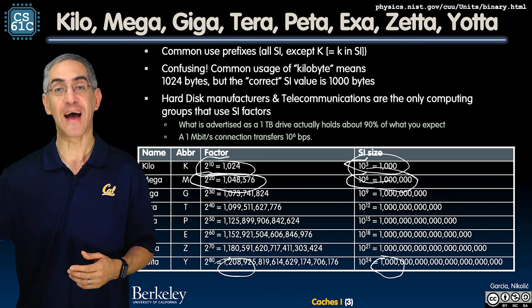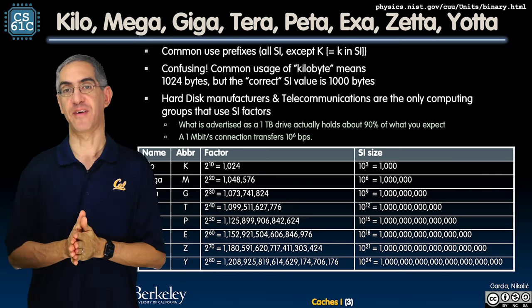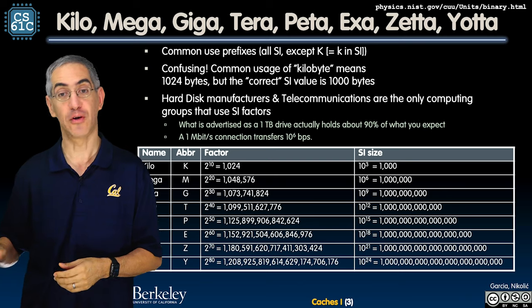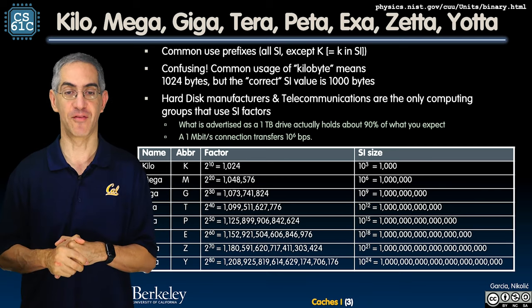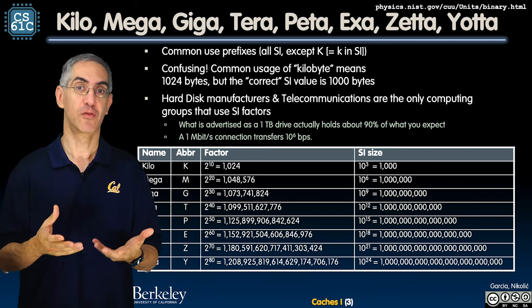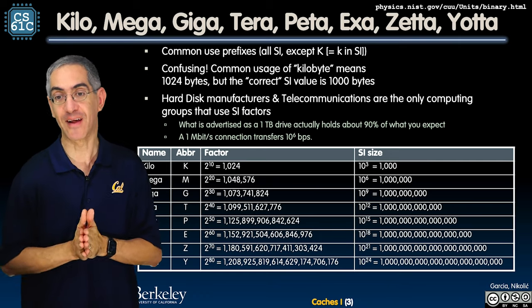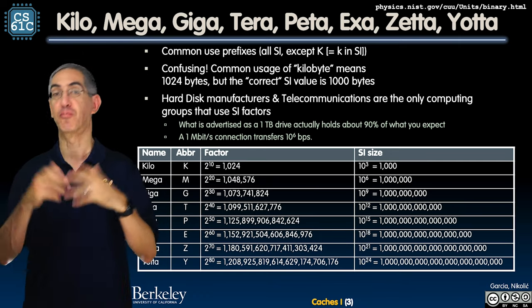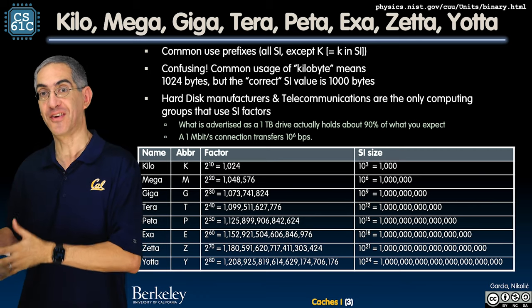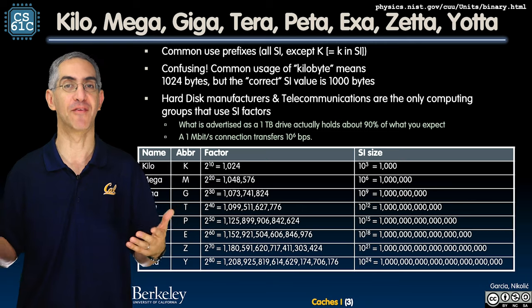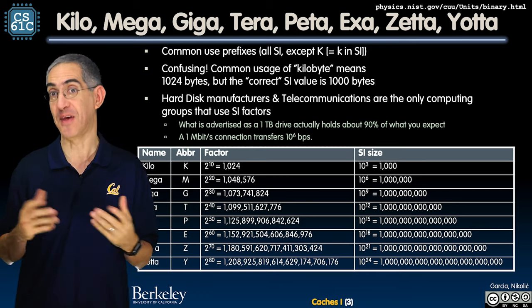There's a historical note: hard disk manufacturers started years ago by using powers of two, then realized powers of 10 are smaller. So a 10 meg hard drive used to mean 2 to the 20 times 10 bytes. They then switched to using the proper SI mega (a million), which is smaller than 2 to the 20. So a 10 gig or 10 terabyte drive uses powers of 10, not powers of two.